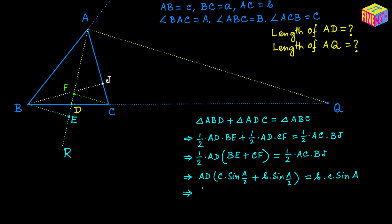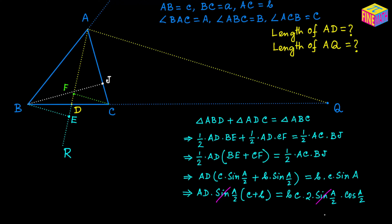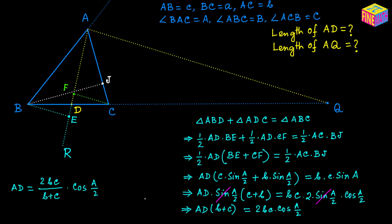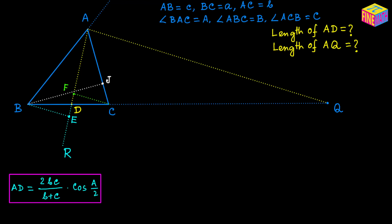Taking sin(A/2) as a common factor on the left: AD·sin(A/2)·(c + b) = b·c·sin(A). Writing sin(A) = 2·sin(A/2)·cos(A/2), the sin(A/2) terms cancel on both sides. We are left with AD·(b + c) = 2·b·c·cos(A/2), and therefore AD = 2bc/(b + c) · cos(A/2).